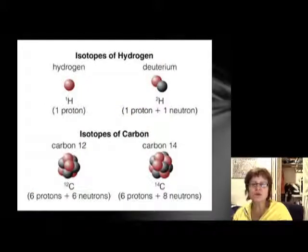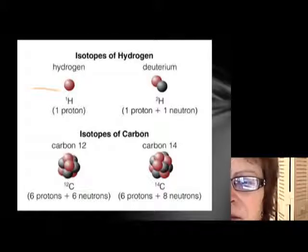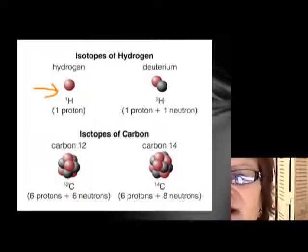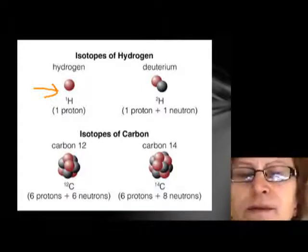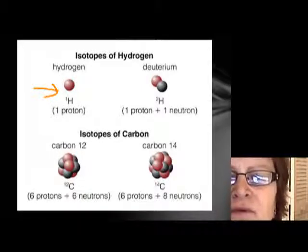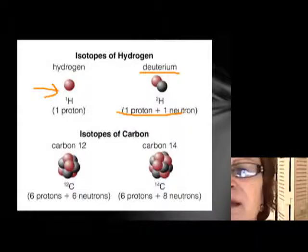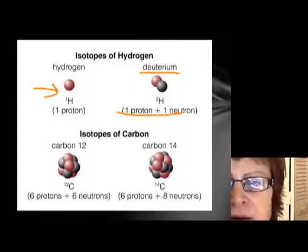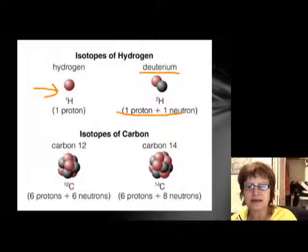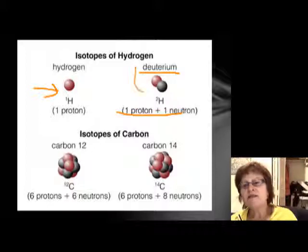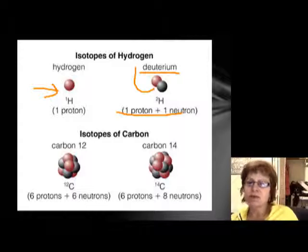This shows the first hydrogen isotope: one proton and no neutrons, so the mass number is one. The other is when you have one proton and one neutron — that's called deuterium, also known as heavy water. In that case you have one proton and one neutron, giving a mass number of two.